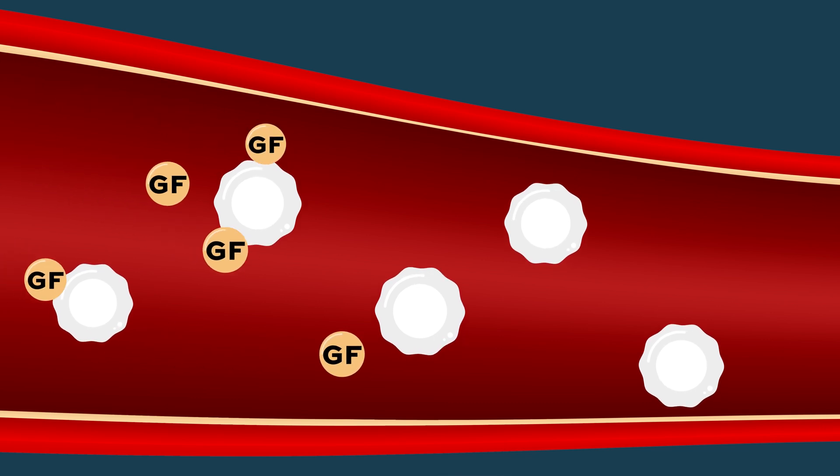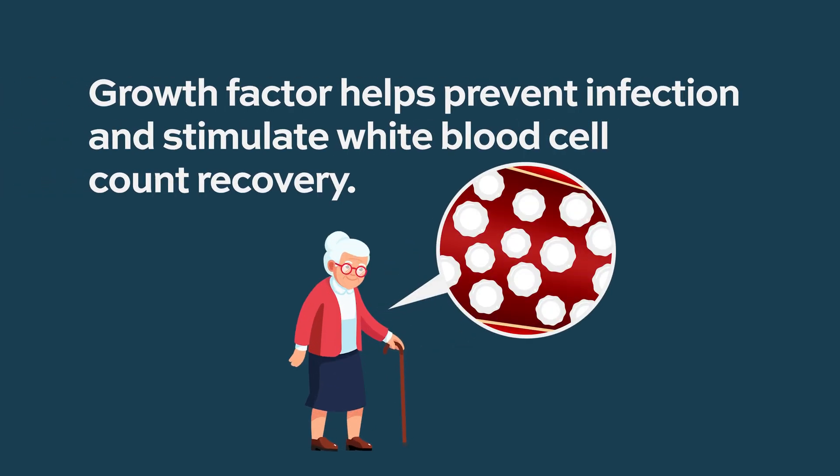There are different names for growth factors, but the common one is G-CSF — granulocyte colony-stimulating factor. Growth factors are injections given to help stimulate white blood cell production. We typically give them when neutropenia is expected to be severe and prolonged for more than seven days, as the risk of infection is high. They help stimulate the bone marrow to facilitate white blood cell count recovery.